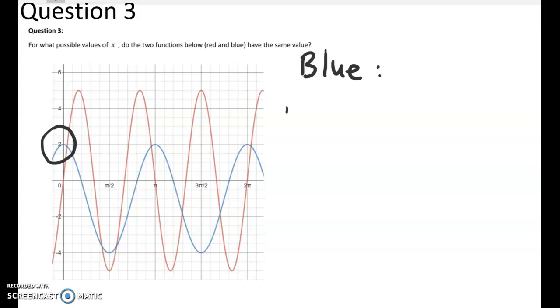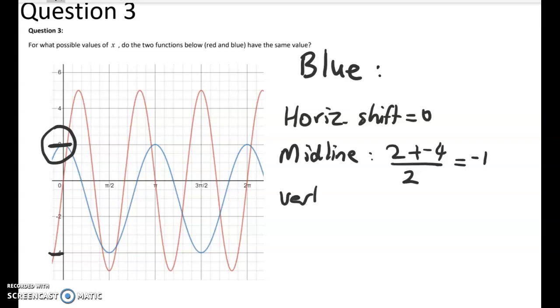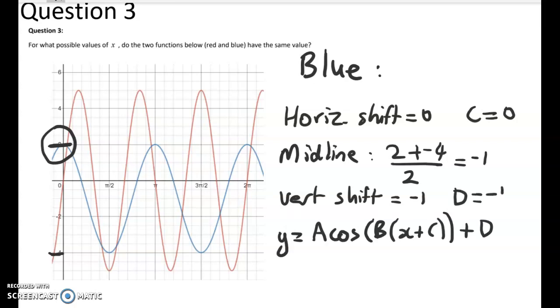So let's start with the blue one. So the horizontal shift is 0. Now the first thing I always work out is the midline, and that's going to give me the vertical shift. So the top of the function is at 2, the bottom is at negative 4, so we find the average of those two numbers. That gives me negative 1. So my vertical shift is equal to negative 1. Remember that the model we're trying to fit here is y equals... so we know that c is equal to 0. The vertical shift is d, so d is equal to negative 1.